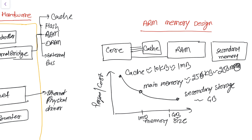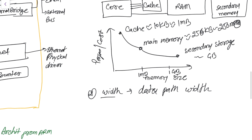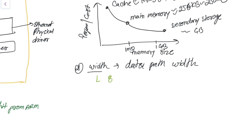There are other factors that affect memory transfer speeds and performance beyond hierarchy. The lesser the distance between memory and the core, the less time it takes to access memory — this creates the hierarchy. Another important feature is width, meaning the data path width.